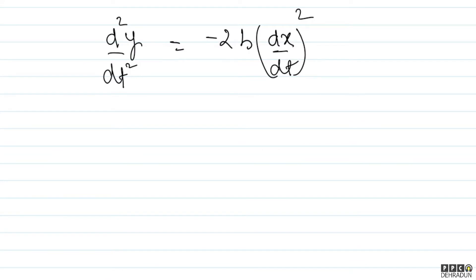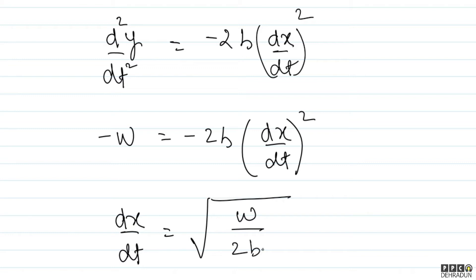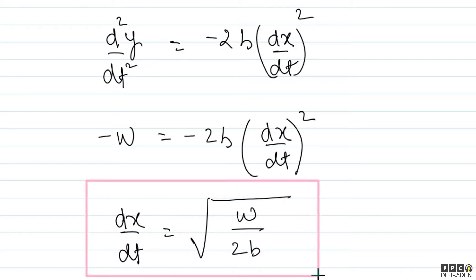Now, d²y/dt² is constant because in the problem it is given that the acceleration is along the negative y-axis and it is constant. So we can write d²y/dt² = -w, which gives us: -w = -2b·(dx/dt)². From this, dx/dt = √(w/2b). This means the velocity along the x-direction is constant, and we can call it ux — the x-component of velocity.